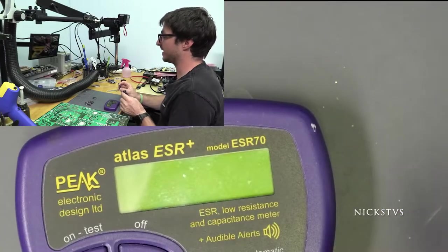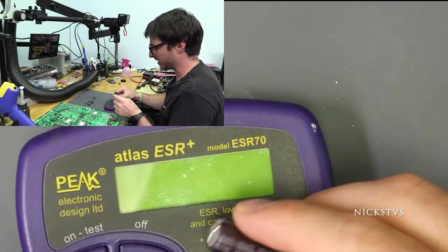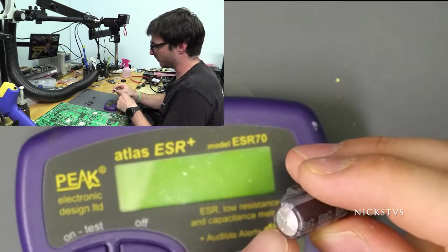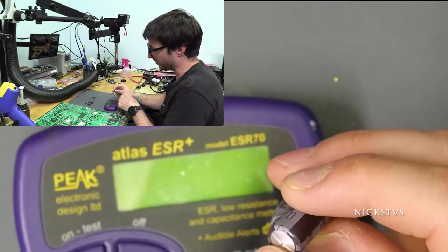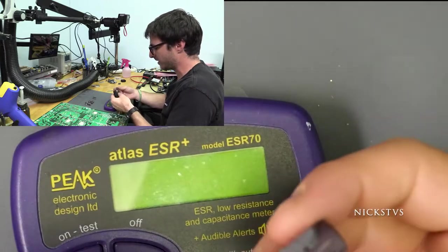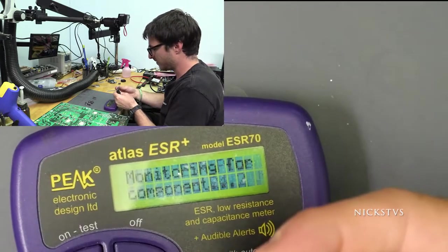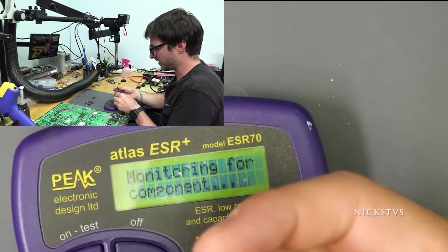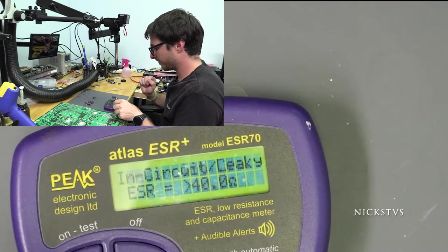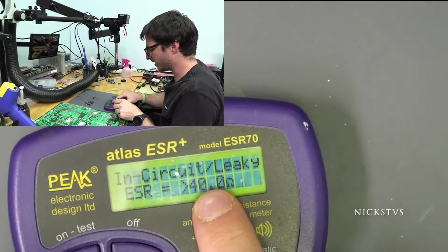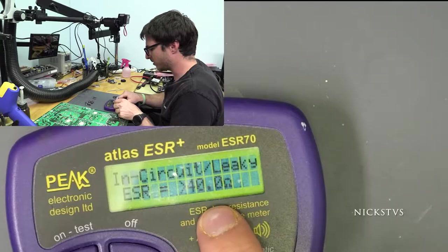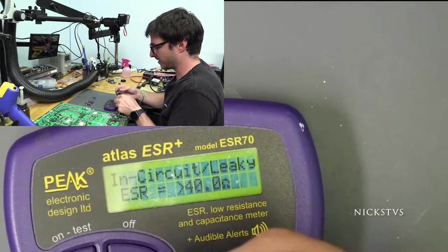Before we replace the capacitors, we're going to just test them with this ESR meter. Now, of course, they're bulging and I can actually see some of the electrolytic fluid leaking out of them. But just to confirm, we'll go ahead and do that test. And it does say in circuit or leaky, ESR equals 40. So obviously this one is bad.